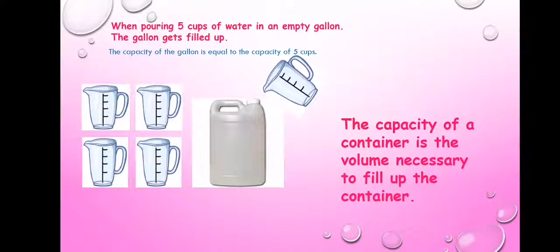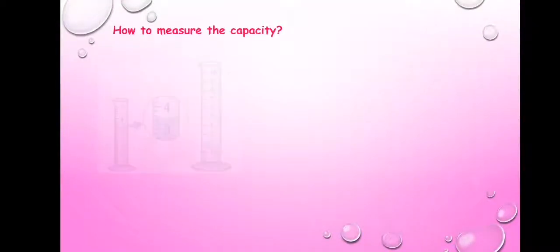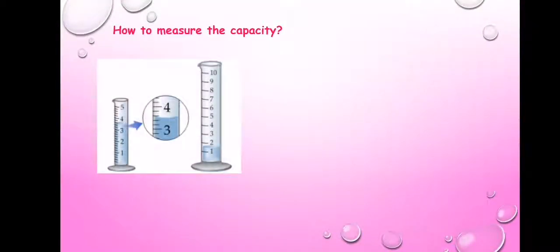The capacity of a container is the volume necessary to fill up the container. So the volume of this gallon is five cups of water that are necessary to fill up the gallon. Now, how do we measure the capacity?